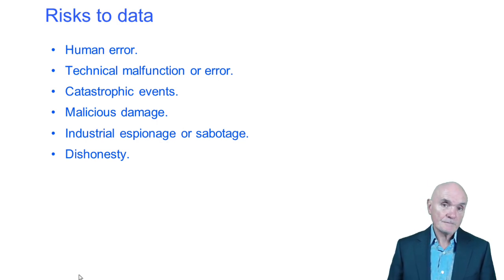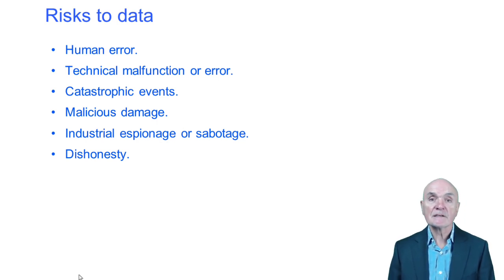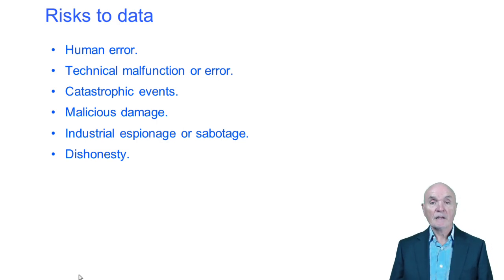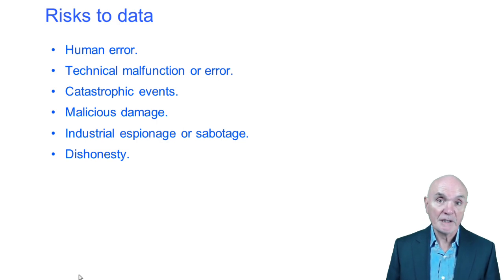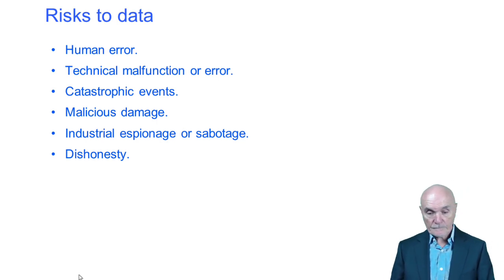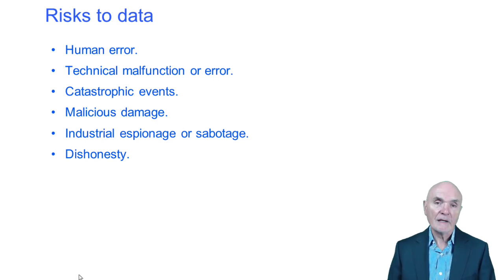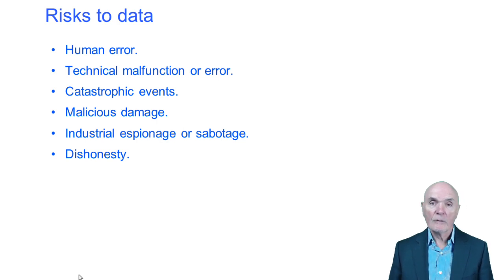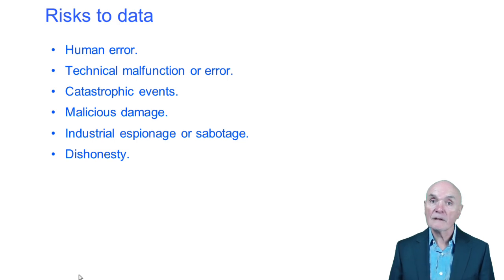There can also be damage without malicious intent — through viruses that access a machine and change, delete, or scramble information — and of course there can be malicious damage to hardware. Catastrophic events such as fire, flood, or a terrorist incident could destroy the whole IT system, and we have to safeguard against this.